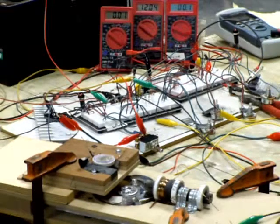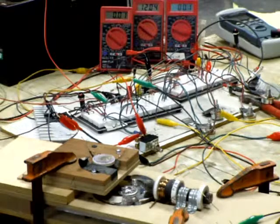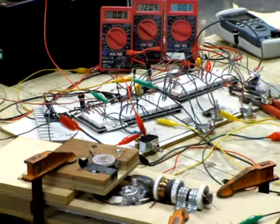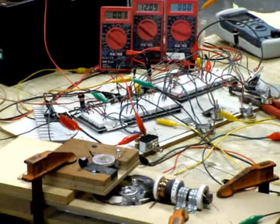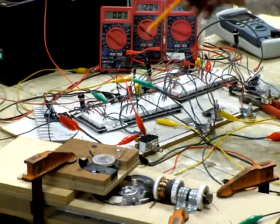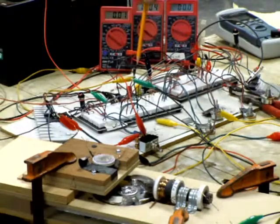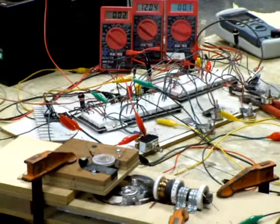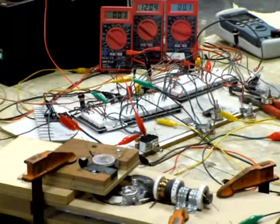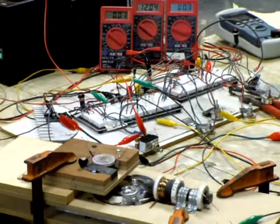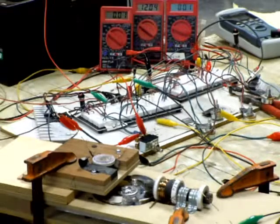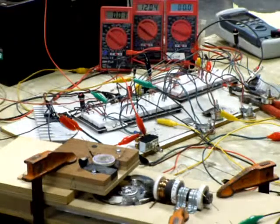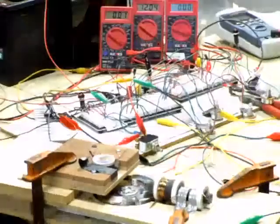Basically what I've got going is two separate Bedini circuits with the battery charging output connected together. So the output diode sides are both going together and they're both using the same battery source, or in my case I'm using a PC power supply right now. But let me show you what's going on and I'll keep talking here.